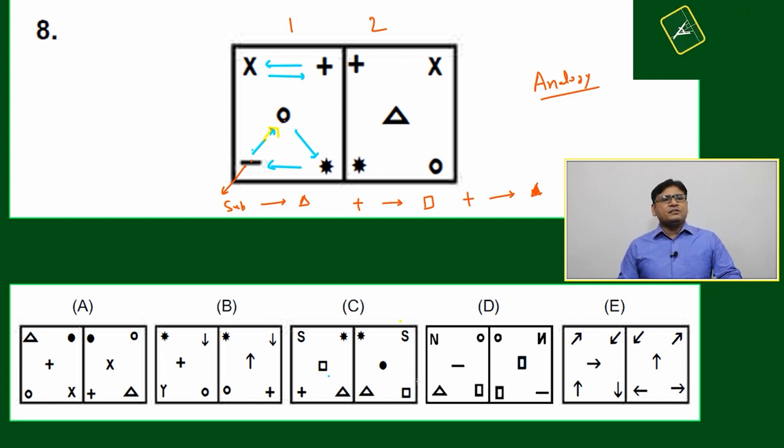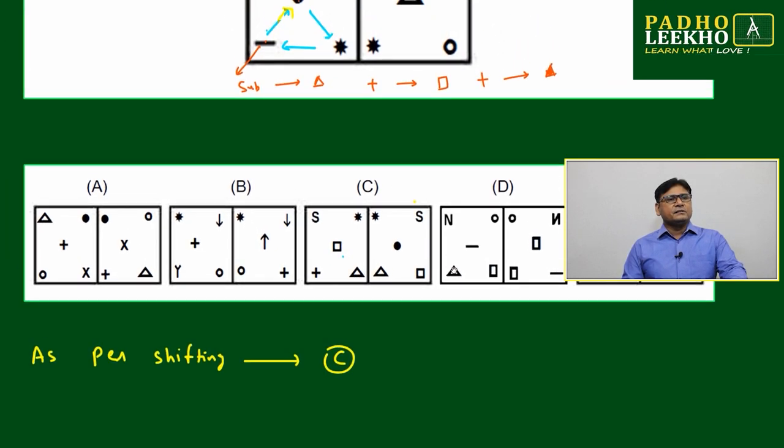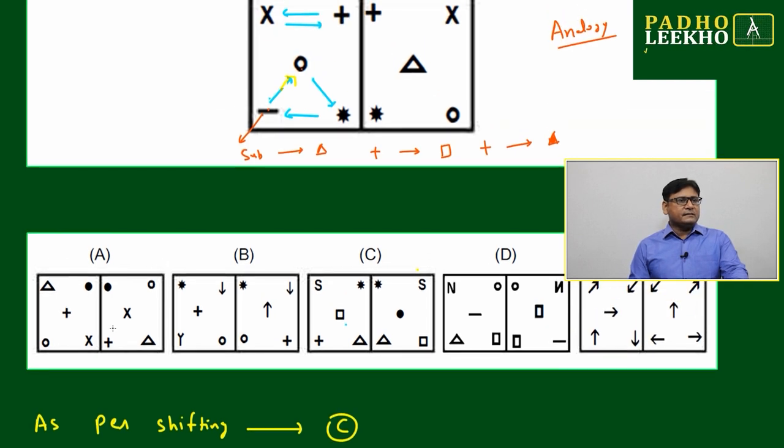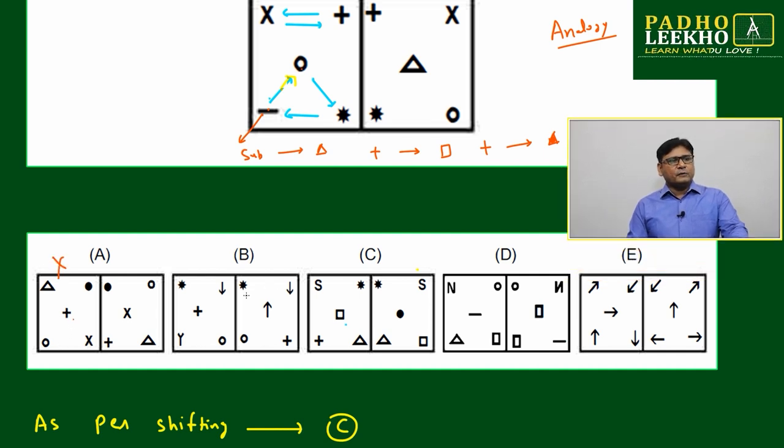Just we'll come to option A and we'll check if this is happening here - plus is coming here, this is going. Option B: these two are interchanging, this is perfectly fine, they are interchanging, plus is coming here. No, see, just we'll look here.